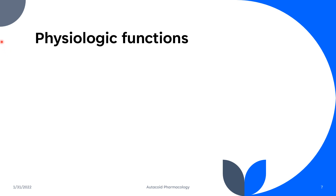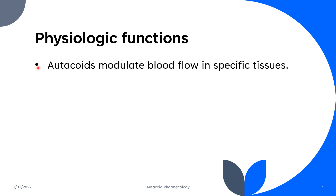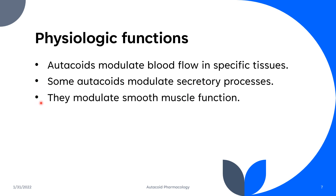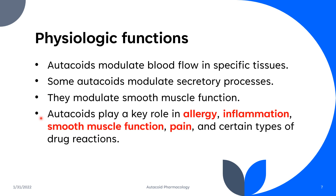These are the physiological functions of autacoids. First, autacoids modulate the blood flow in specific tissues. Second, some autacoids modulate the secretory processes — for example, histamine modulates gastric acid formation in the stomach. Third, autacoids modulate smooth muscle function. They also play a key role in allergy, inflammation, smooth muscle function, pain, and certain types of drug reactions such as anaphylactic reactions.